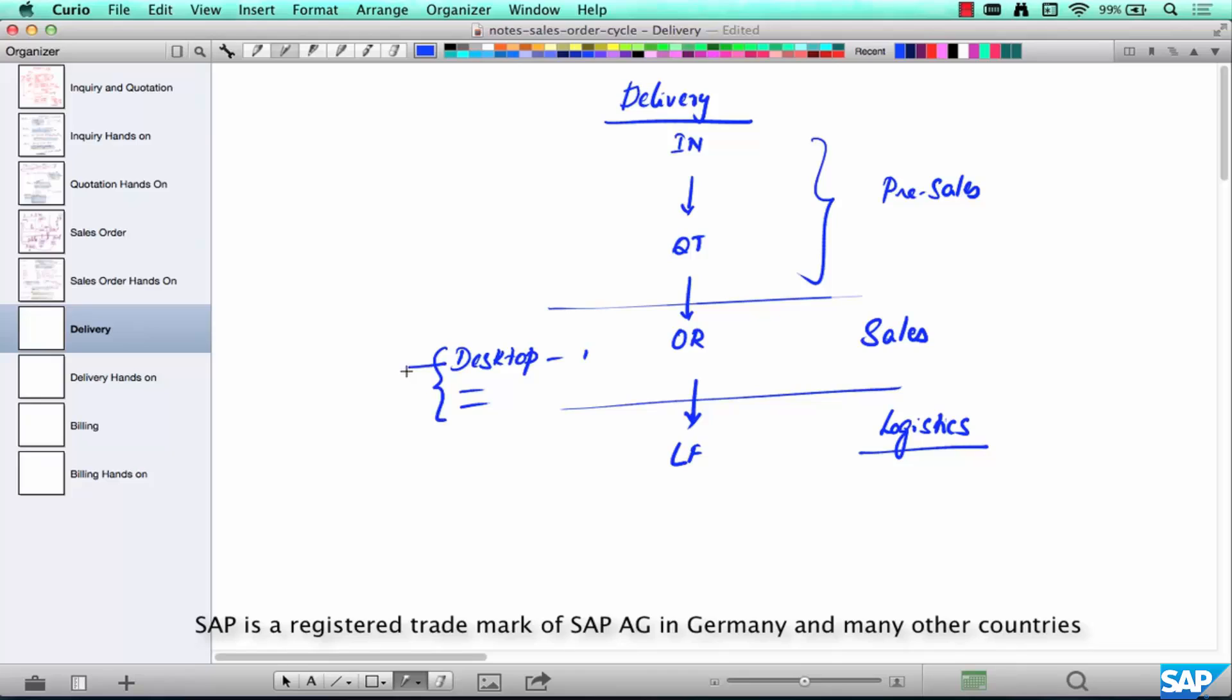And each line item over here will have what is called confirmed date. You remember when creating the order, SAP has already done what is called as an availability check.